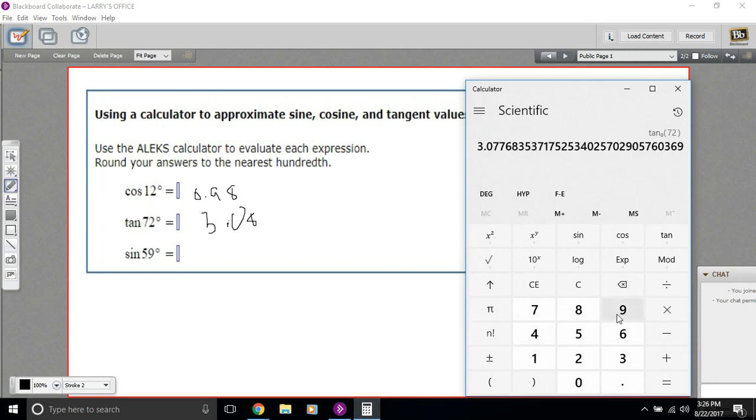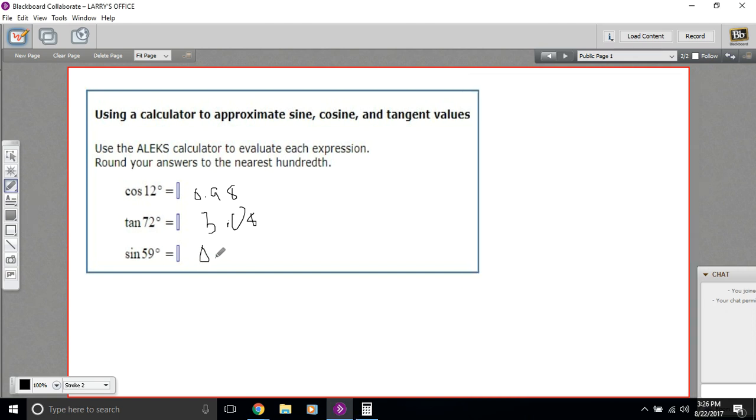And finally the sine of 59 and we get 0.86. So that's really all there is to using the calculator to evaluate these tangent functions.